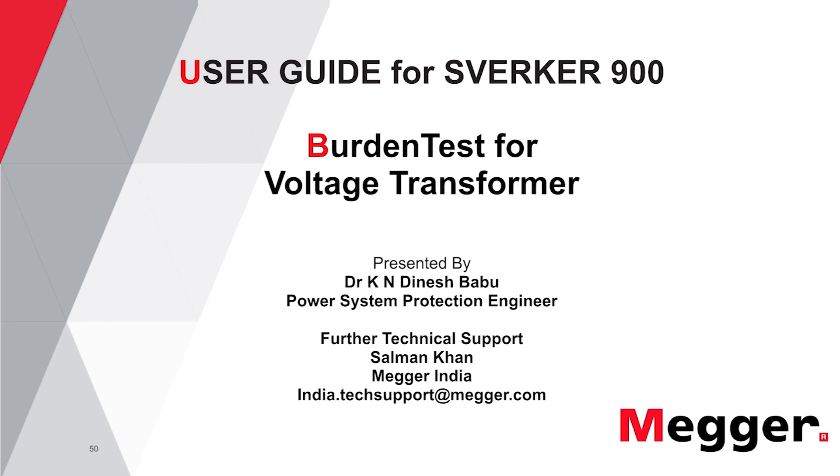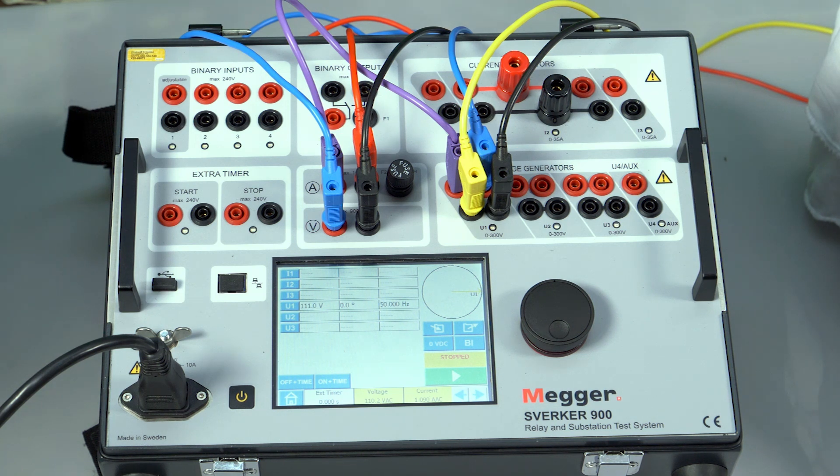Burden Test for Voltage Transformer. The Sverker 900 test equipment has a very high burden to test electromechanical, static, numerical relays and also for testing current transformers.